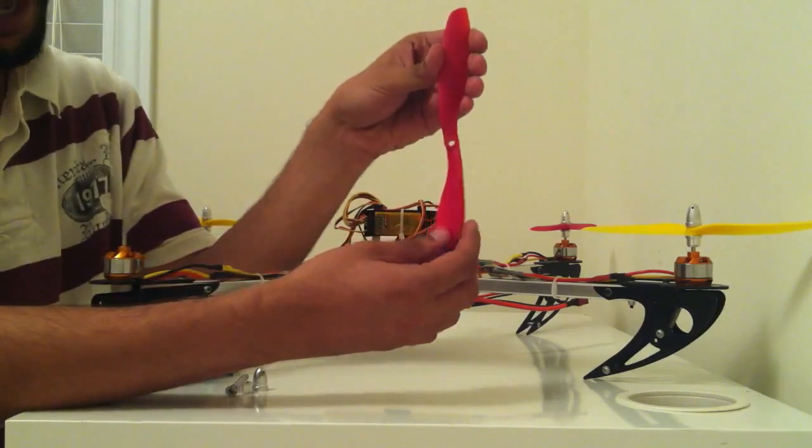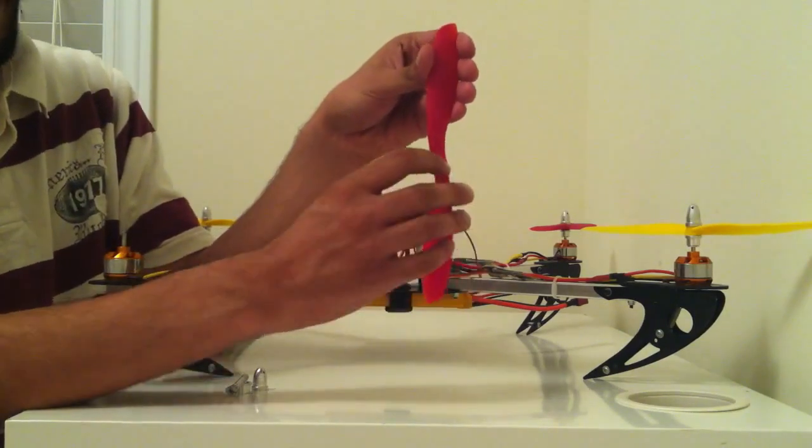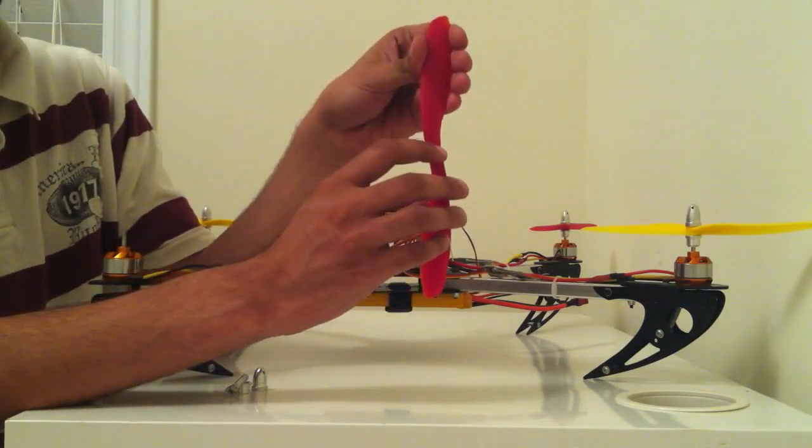Next, repeat the same process with the counterclockwise prop. As you can see, the ridge is pointing to the left.